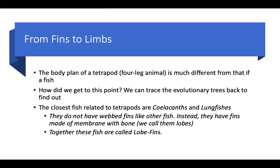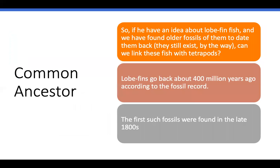Lungfish, as the name implies, have something close to lungs, and they do not have webbed fins like other fish. They have a structure of bones covered with a membrane — we call these lobes. So they're not fins, they're lobes, and we call both of these fish lobe-fins. We have an idea about lobe-fin fish: they have bones covered with membranes, and they still exist so we can look at examples today. Can we find fossils from the earliest lobe-fins? They go back about 400 million years ago, and the first fossils were found in the late 1800s.